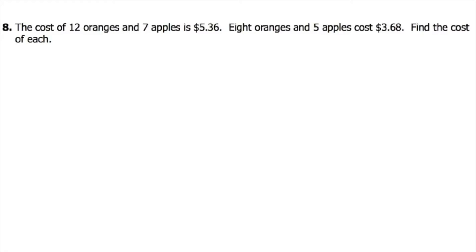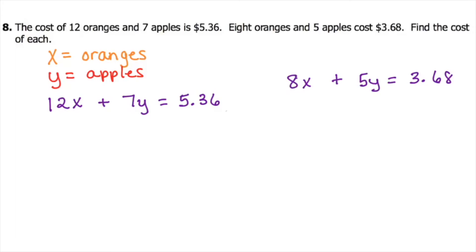So that's your two items: $1.15 for a box of envelopes and $2.45 for a box of notebook paper. Number eight: the cost of 12 oranges and 7 apples is $5.36; 8 oranges and 5 apples cost $3.68 — find the cost of each. Oranges are mentioned first so x represents oranges and y represents apples. The first sentence gives 12x plus 7y equals 5.36 and the second gives 8x plus 5y equals 3.68. Using elimination, you can cancel out the y terms by multiplying to get to 35 — I chose that over the x variable because the LCM for 12 and 8 would require a larger multiplier.